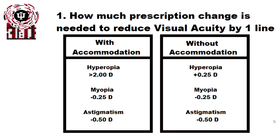Without accommodation, though, hyperopia or myopia equally blurs. So a quarter diopter, plus or minus, will equally blur acuity by one line, and astigmatism still is by a half diopter.